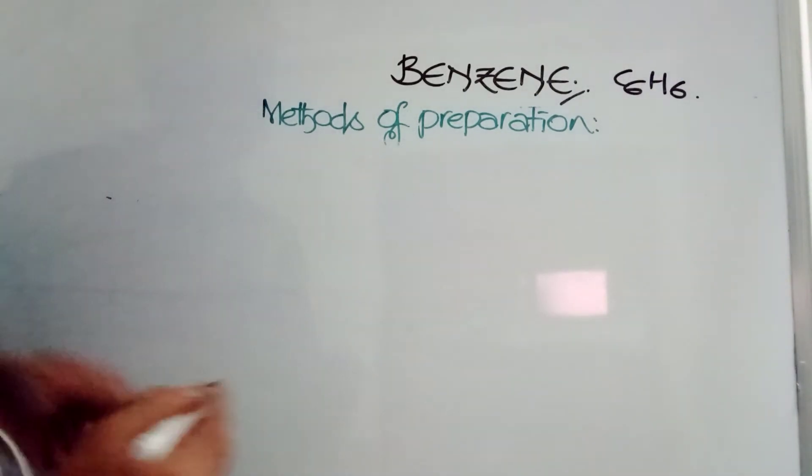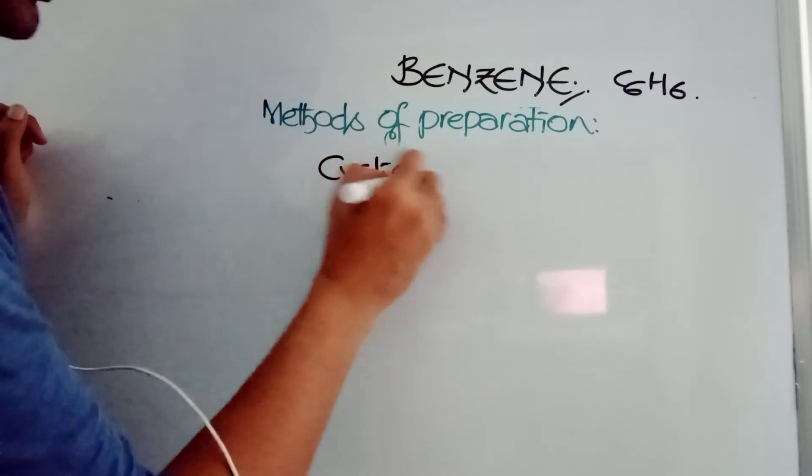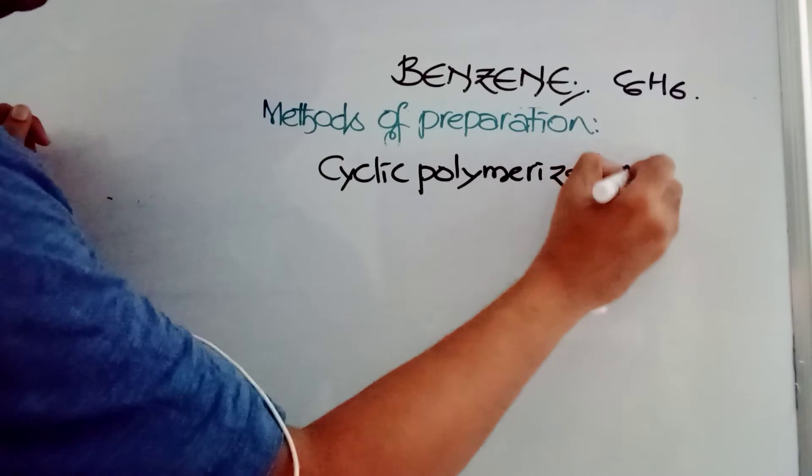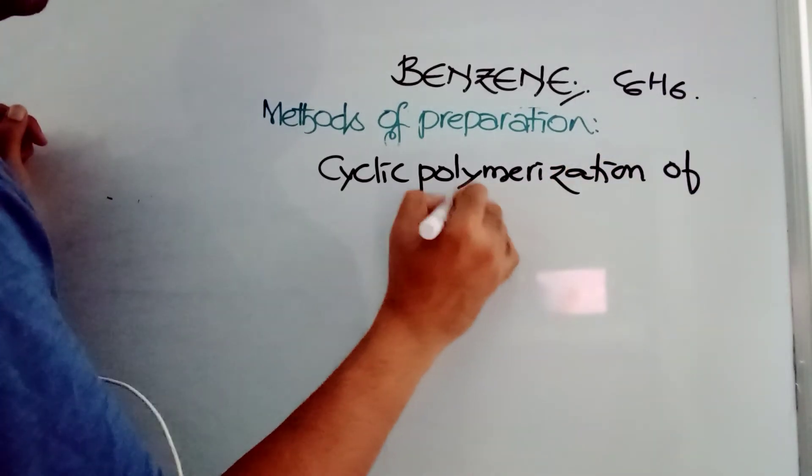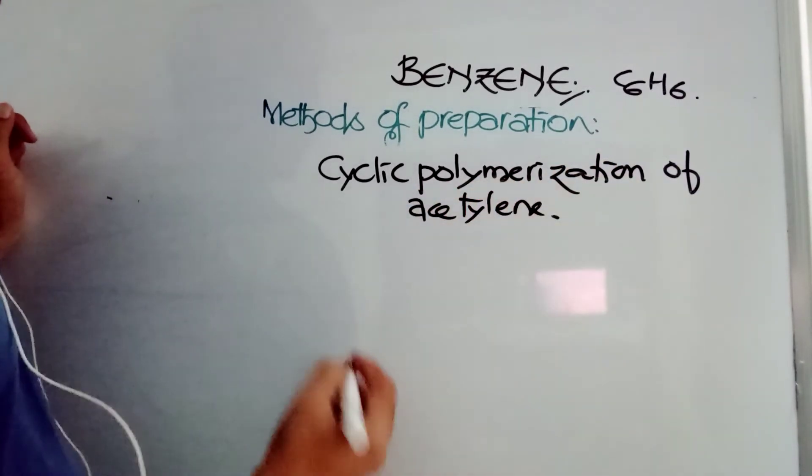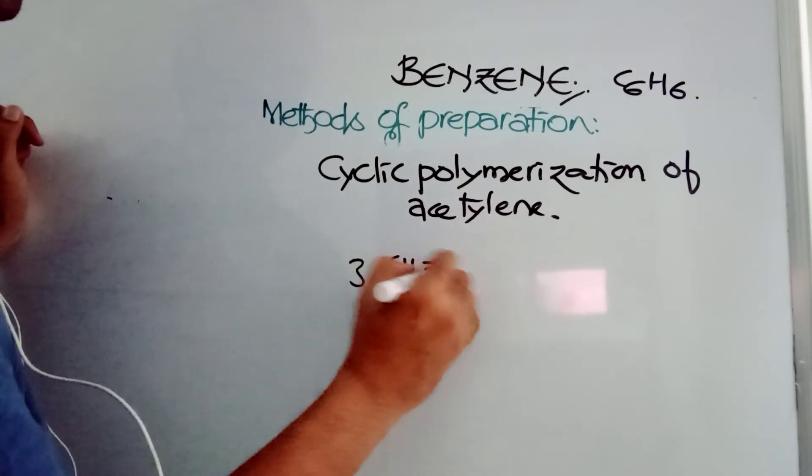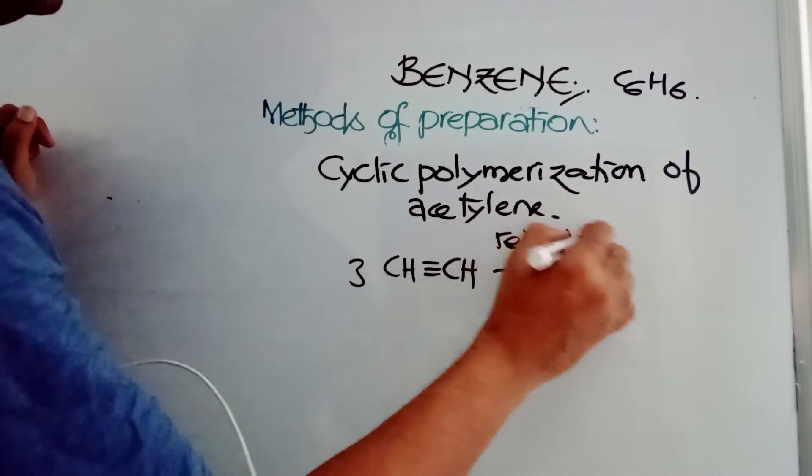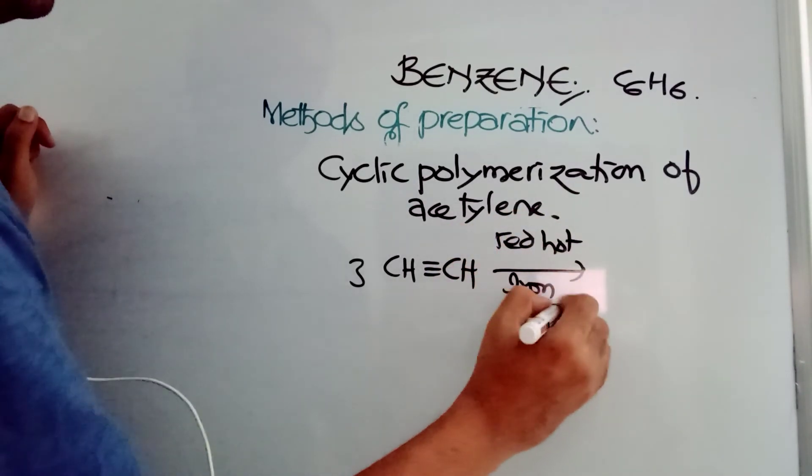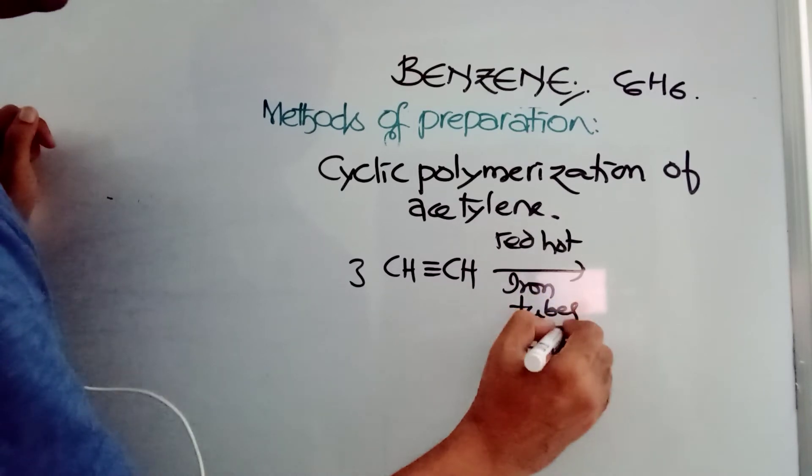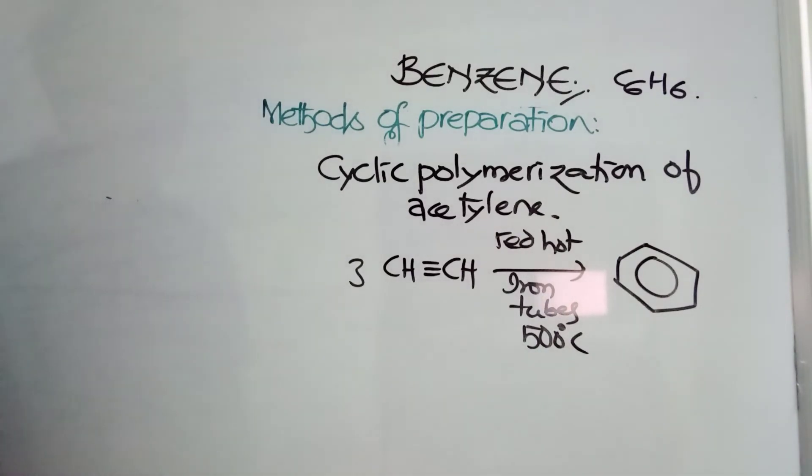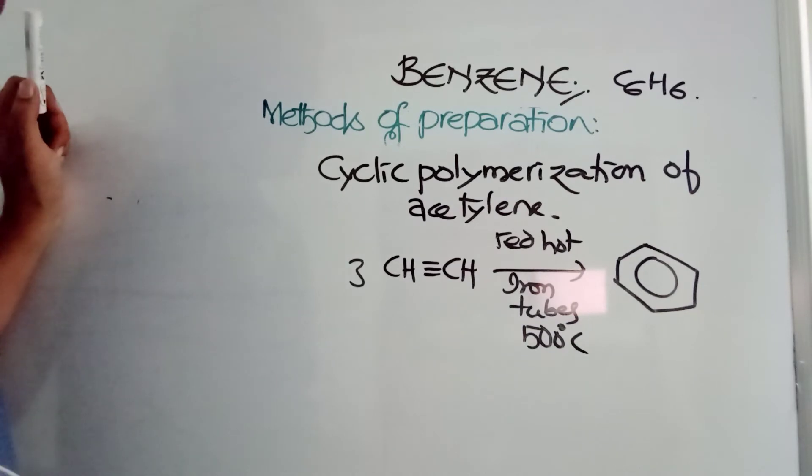We can prepare benzene by cyclic polymerization of acetylene. Three moles of CH triple bond CH, this is acetylene, when passed through red-hot iron tubes, temperature 500 degrees Celsius, you are getting your benzene. Benzene can be prepared from acetylene by cyclic polymerization in the presence of red-hot iron tubes.